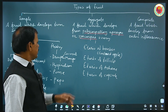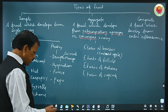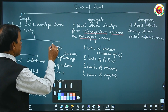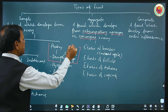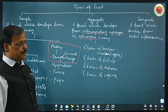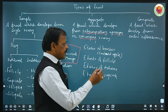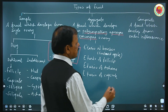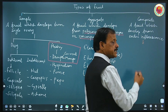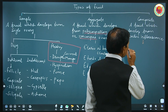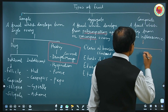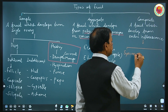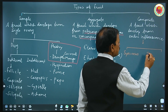What is in your syllabus is only simple fleshy fruit. A very important question can be asked about composite fruit because there are some exceptions. There are two types: sorosis and syconus, which develop from entire inflorescence.